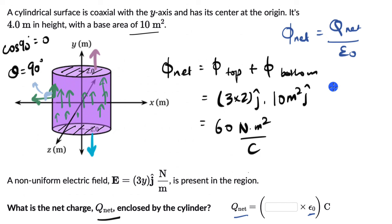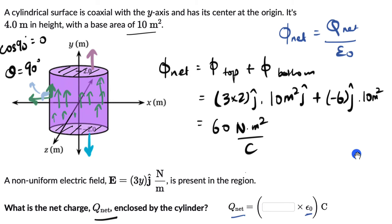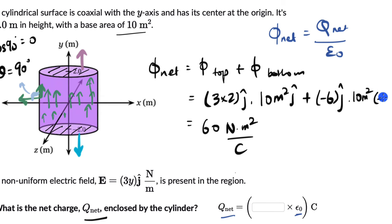For the bottom surface, y = -2, so E = 3(-2) = -6 ĵ. The area vector at the bottom points in the -ĵ direction. So the flux through the bottom is (-6 ĵ) · (10)(-ĵ) = 60 N·m²/C.